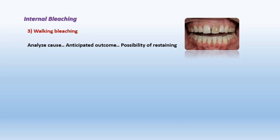Before starting bleaching, I must analyze the cause of the discoloration and how to deal with it. Is it a resistant discoloration, a deep discoloration? What is the anticipated outcome? The possibility of re-staining must also be considered — whether the patient is willing to maintain their bleached teeth or will re-stain them through smoking, drinking, or stained food. Some stains cannot be bleached, and some patients are not compliant.